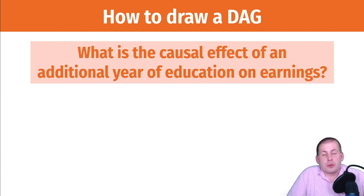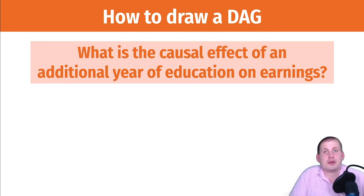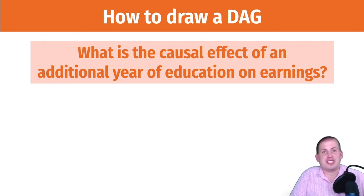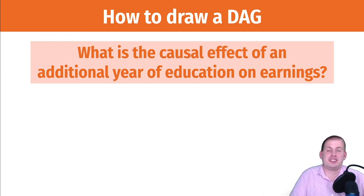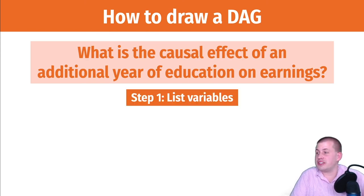We're going to walk through an example of how to draw a DAG, and in your assignment next week you'll do this in real life with a couple of different programs and social phenomena. For this example, we'll ask: what is the causal effect of an additional year of education — specifically college education — on your earnings? Economists love this question, and we'll return to it throughout the semester when talking about instrumental variables and difference-in-differences estimation.